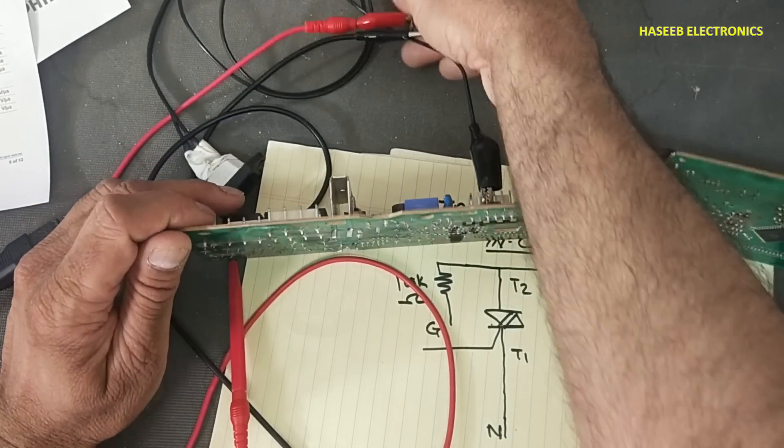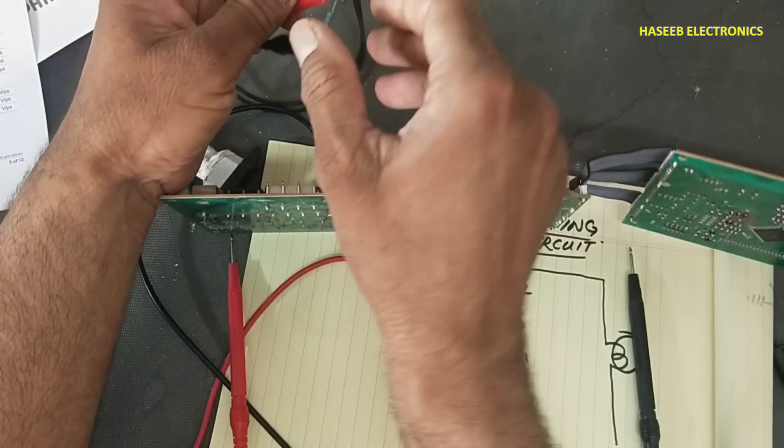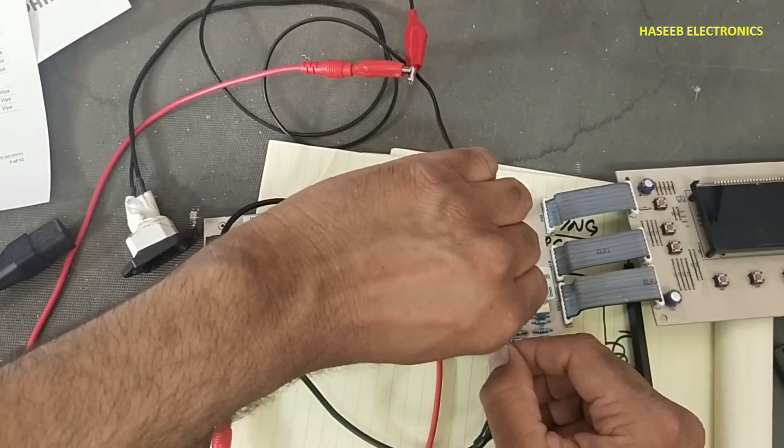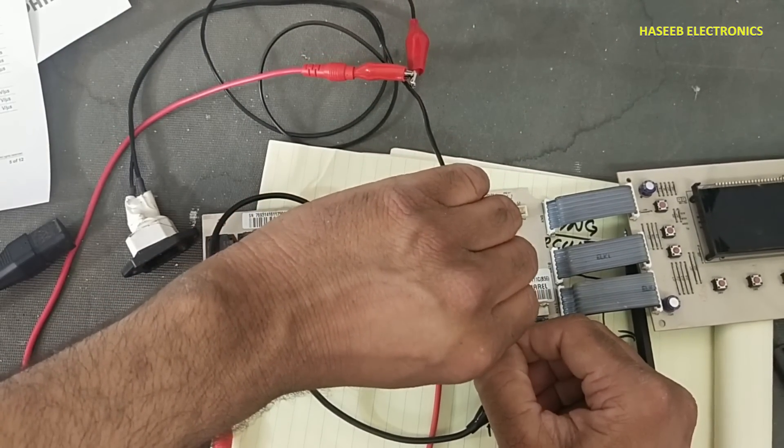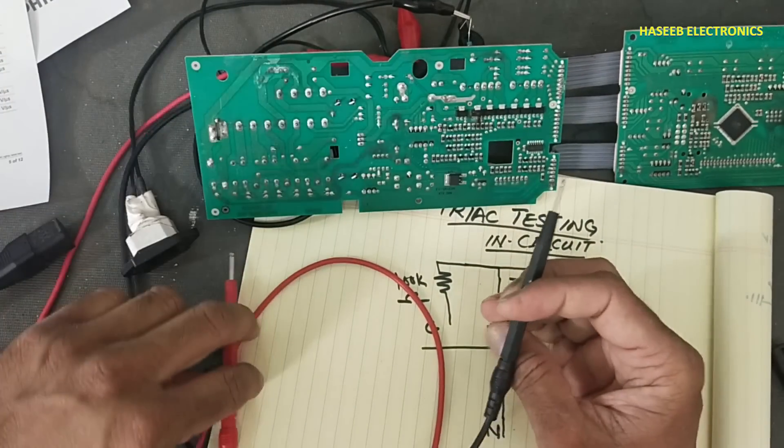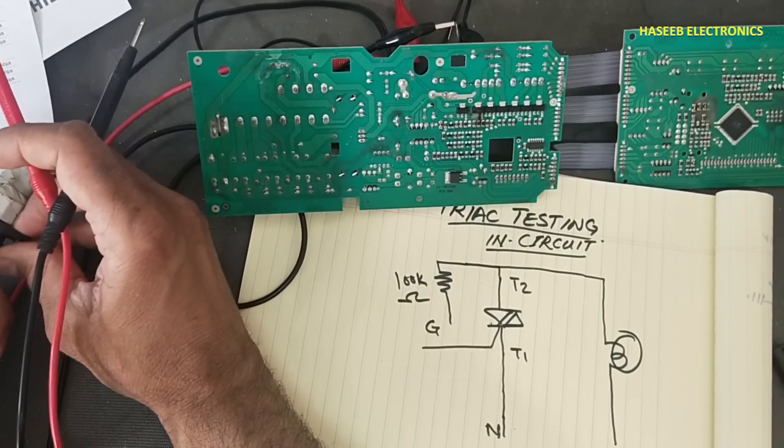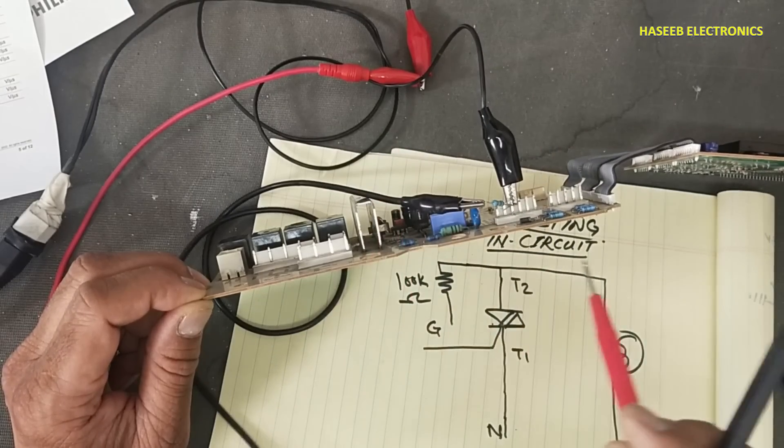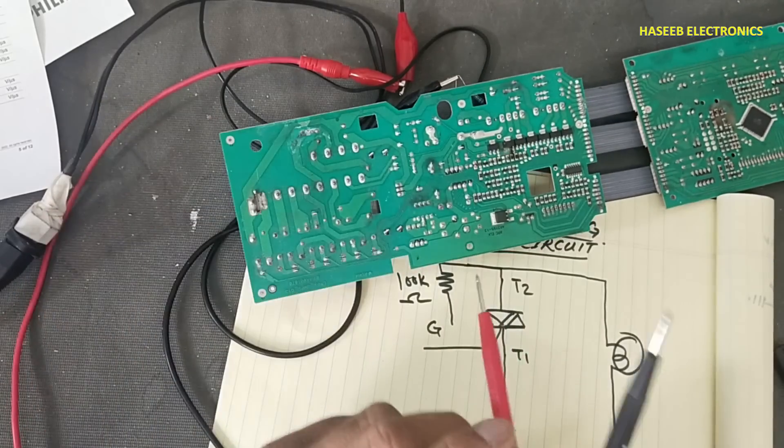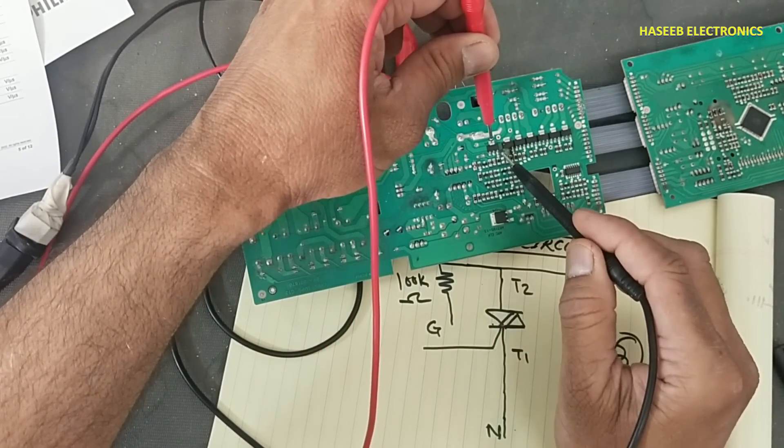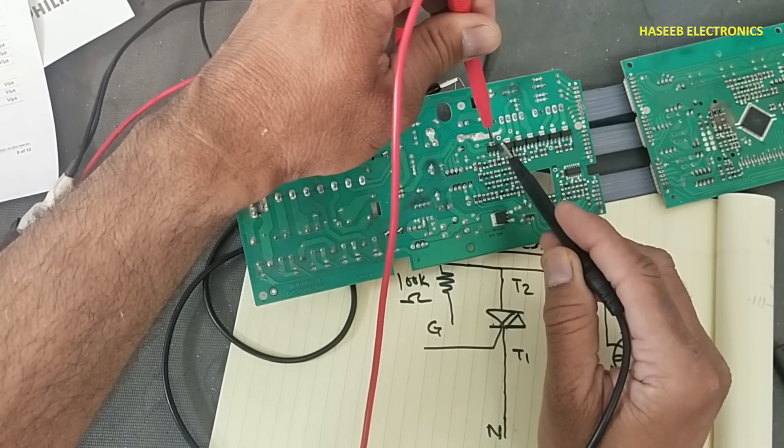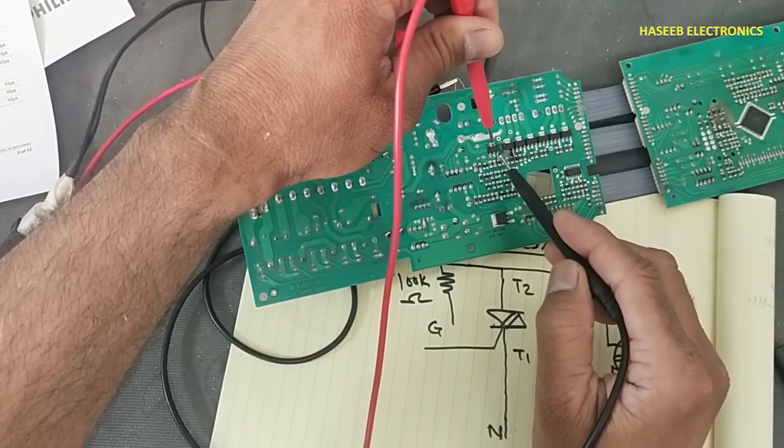Let me connect this resistance to terminal 1, the common point. If you connect this resistance between terminal 1 and gate, it's not turning on because the triac needs voltage between terminal 2 and gate.